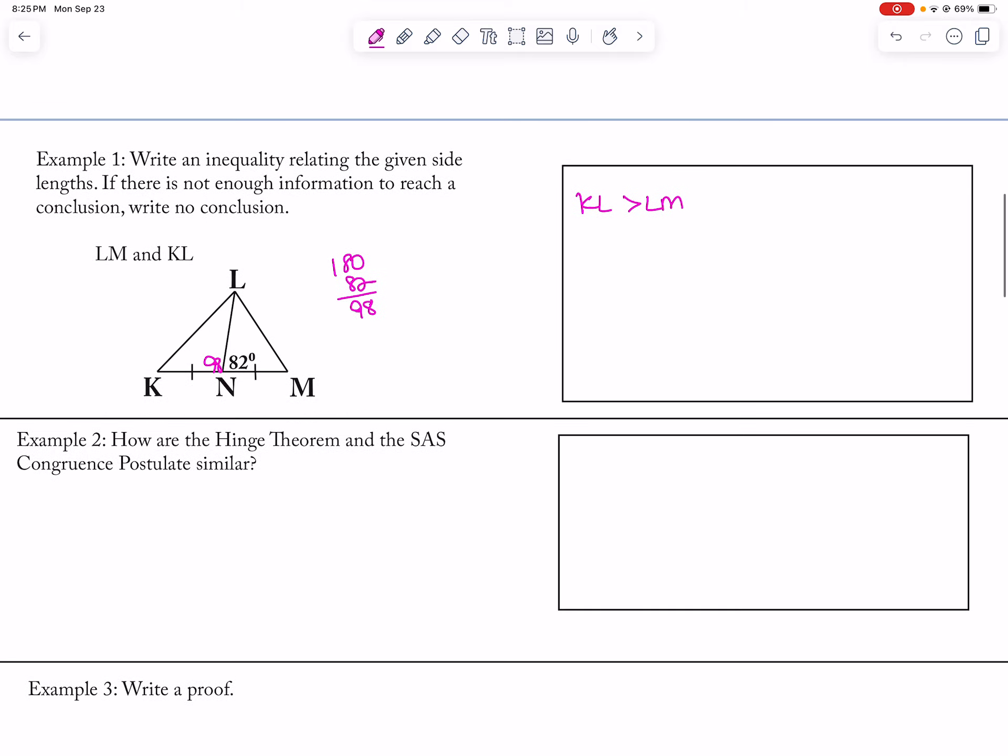How are the Hinge Theorem and the Side-Angle-Side congruence postulate similar? Both deal with triangles. Both have two pairs of congruent corresponding sides, and then there's a relationship between the angles that are formed with those sides.